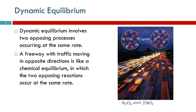One analogy for this is to think about a freeway. We have people traveling north on Highway 99, and we have people traveling south on Highway 99. And if you have a dynamic equilibrium occurring...